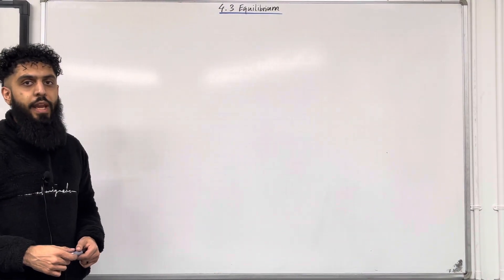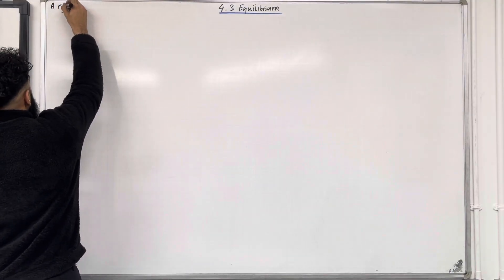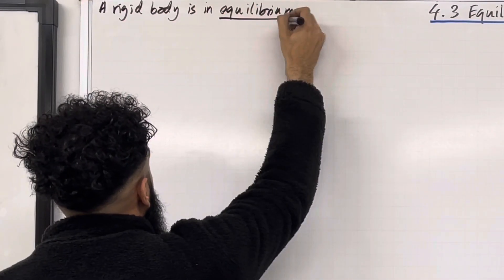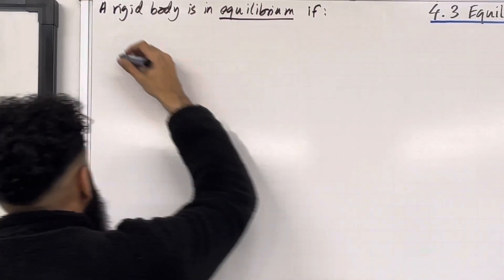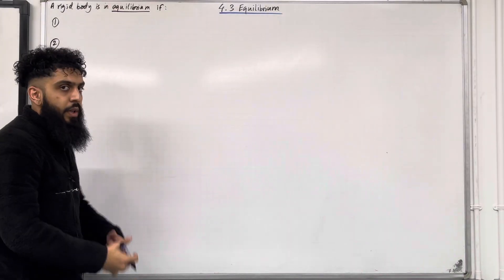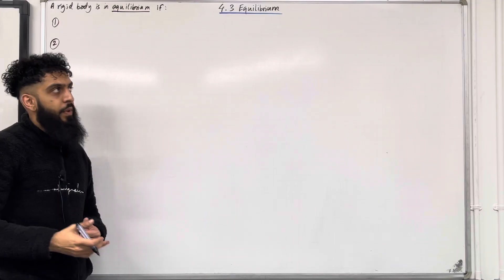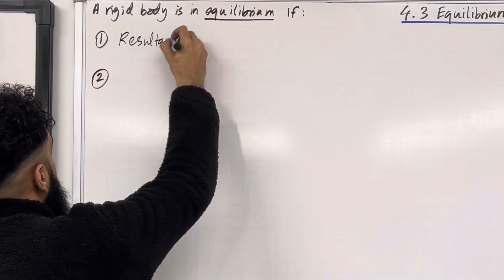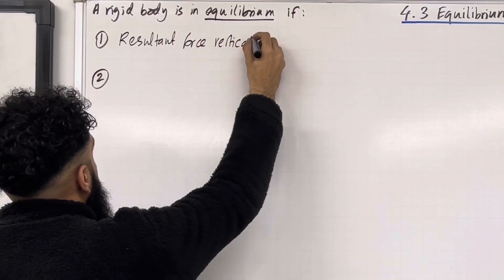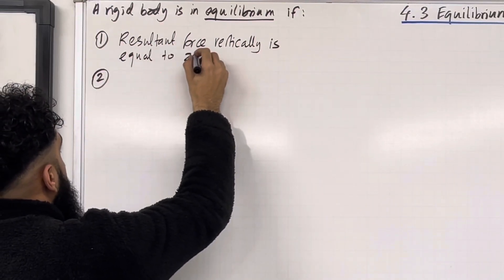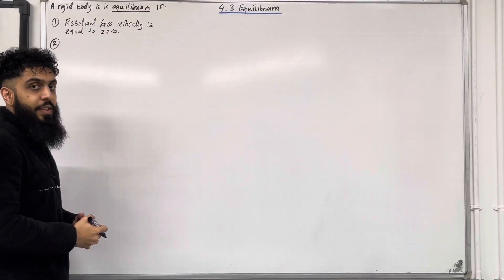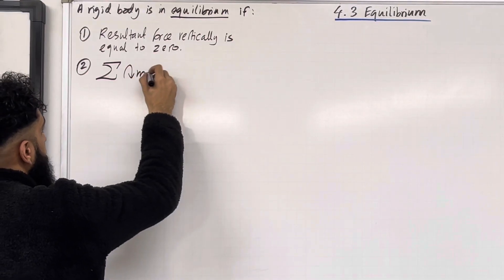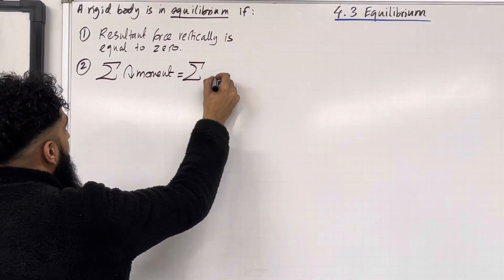Firstly, what does it mean for a rigid body to be in equilibrium? A rigid body is in equilibrium — this means that the body is not moving — if two conditions are satisfied. Condition number one: the resultant force in any direction is equal to zero. For this section 4.3 Equilibrium, we're going to be looking at vertical forces, so condition number one is that the resultant force vertically is equal to zero. Condition number two: the sum of clockwise moments is equal to the sum of anticlockwise moments.